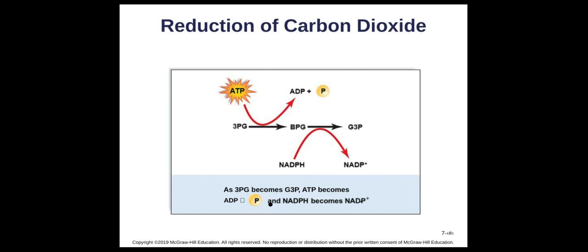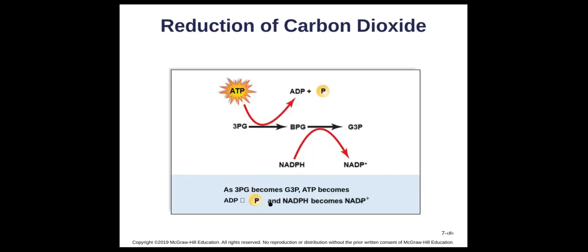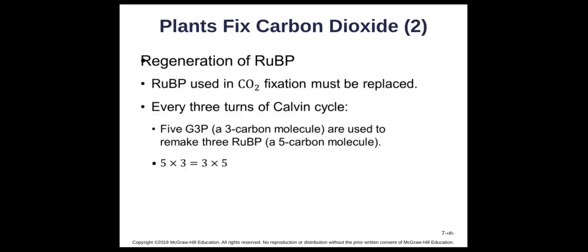Looking at the reduction step more closely: we have 3-PG, we add energy to get the intermediate BPG, then we add NADPH — our coenzyme — and we make G3P. G3P is our important molecule used to restore RuBP and to make other molecules in the plant. The Calvin cycle must go through three turns so that five G3Ps can regenerate three RuBPs — that's why you see three CO2 molecules entering: the cycle needs to run three times.